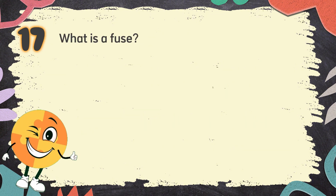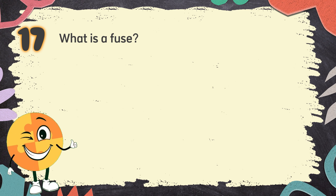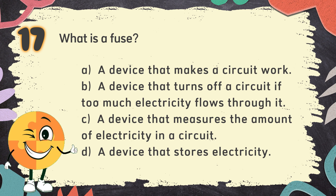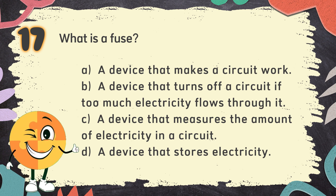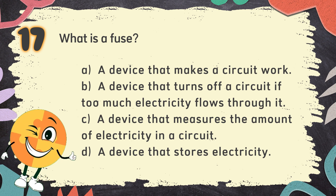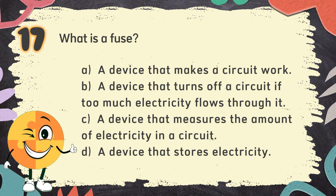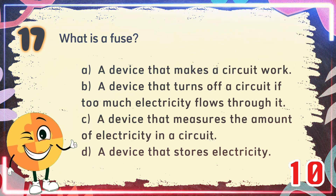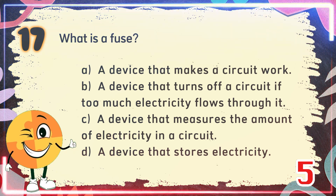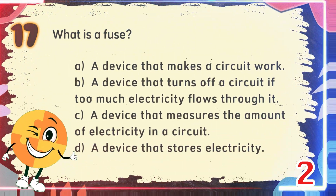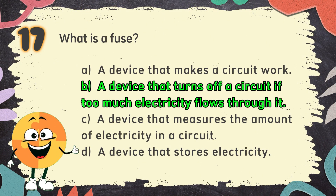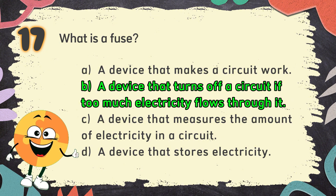Number 17. What is a fuse? The choices are: A. A device that makes a circuit work, B. A device that turns off a circuit if too much electricity flows through it, C. A device that measures the amount of electricity in a circuit, D. A device that stores electricity. The correct answer is B. A device that turns off a circuit if too much electricity flows through it.